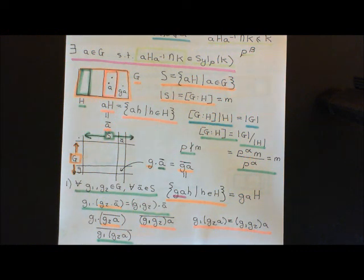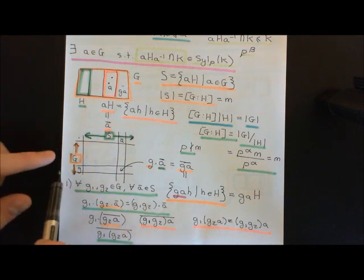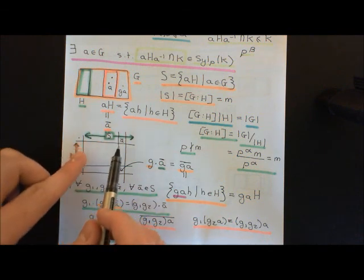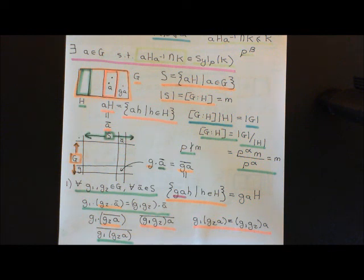Since this is a valid group action, we can associate with each element of the group a set permutation of S, and these permutations are consistent with the group composition law. But more important for us is to consider the orbits and stabilisers of this group action.